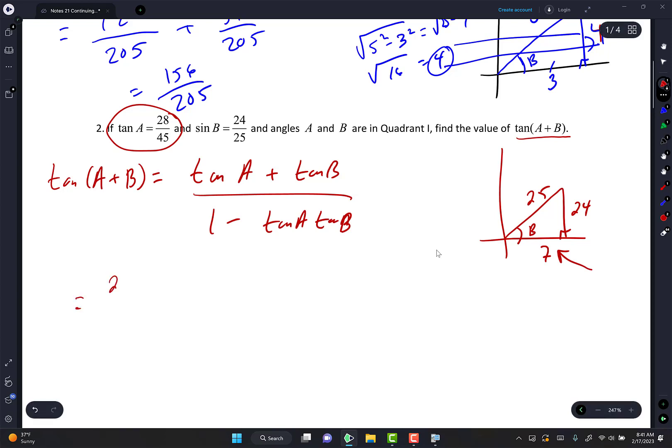Equals tan A is given. 28 over 45. Plus tan B, 24 over 7. Opposite over adjacent. 24 over 7. All over 1 minus tan A. 28 over 45 times tan B, 24 over 7. I would type it carefully into the calculator. And then just tell the calculator to give me a fraction.